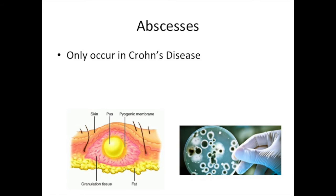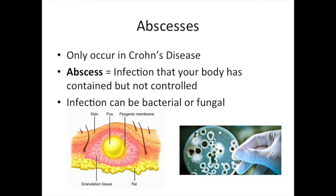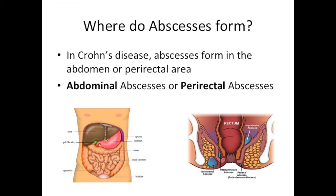Abscesses generally only occur in Crohn's disease. In the most general terms, an abscess is an infection that your body has contained but not necessarily controlled. The infection is usually bacterial but can be fungal also. Abscesses are very common — even pimples can be considered a kind of small abscess. The types of abscesses that occur in Crohn's disease are more often in the abdomen or in the perirectal area, appropriately called abdominal abscesses or perirectal abscesses.